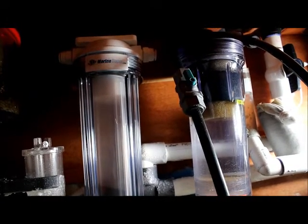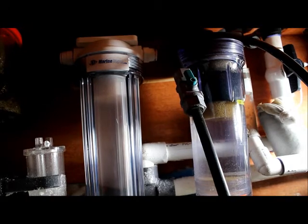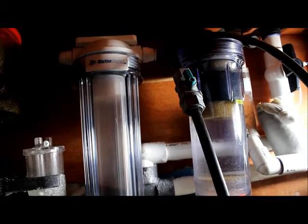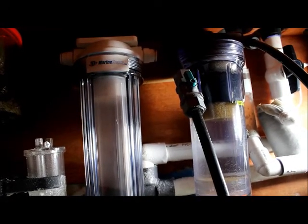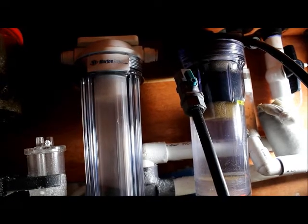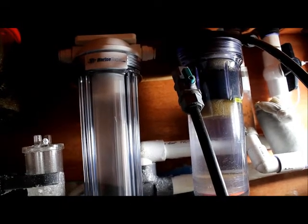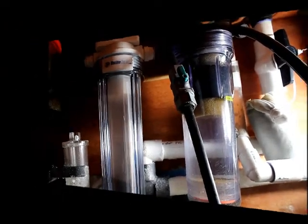Alright, so I'm gonna go ahead and start hooking up the reactor on the left. My plan is using one Maxi Jet 1200 to go to the first reactor and then loop it in through the Bulk Reef Supply reactor to run carbon.